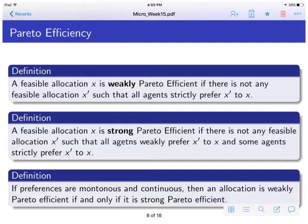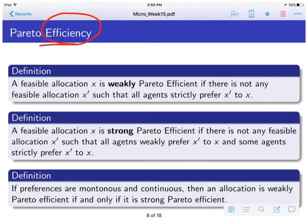We will start by going again through the concept of efficiency. Remember that we said that efficiency was like the big promise of the economist. We didn't say that markets were going to be nice markets, whatever nice means. We didn't say that everyone would get the highest utility possible. What we said was that if there was a solution, it was going to be efficient — but not any efficiency — efficient in the sense of Pareto.